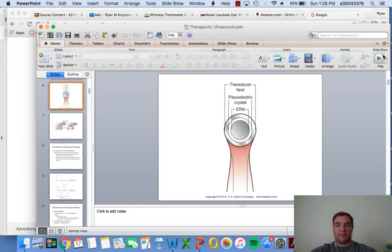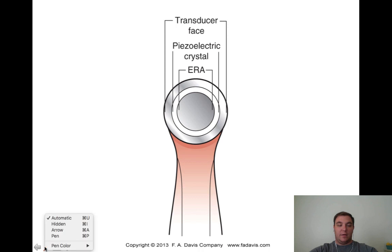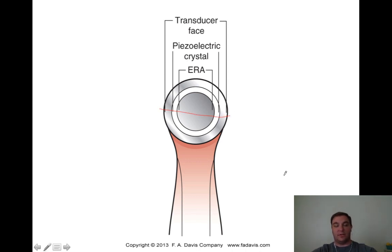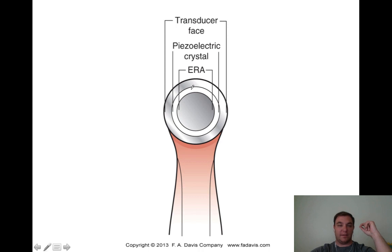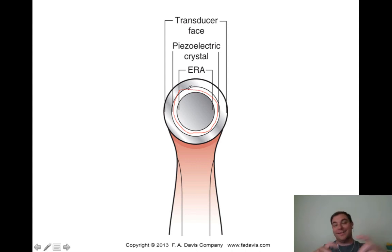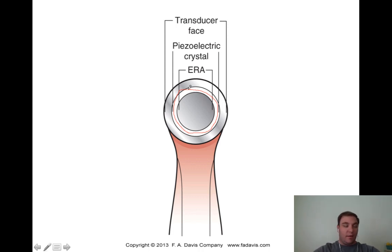Key terms to understand: ERA, transducer face, and piezoelectrical crystal. The whole face is considered the transducer face. Within it, the piezoelectrical crystal doesn't take up the whole transducer face - you have different sizes of ultrasound heads. The ERA, or effective radiating area, is always smaller than the transducer face.